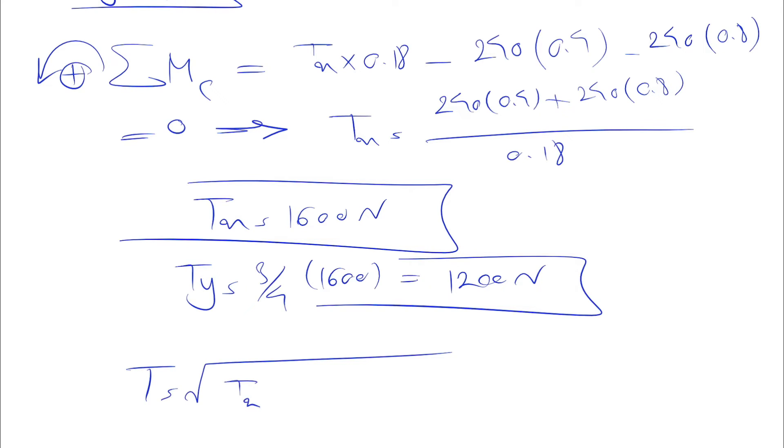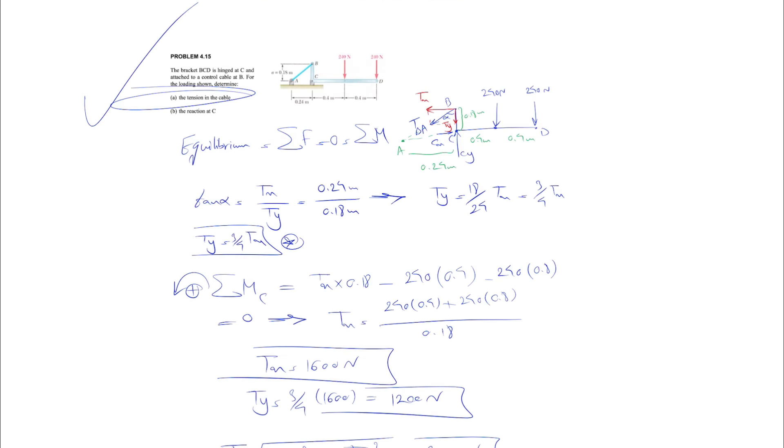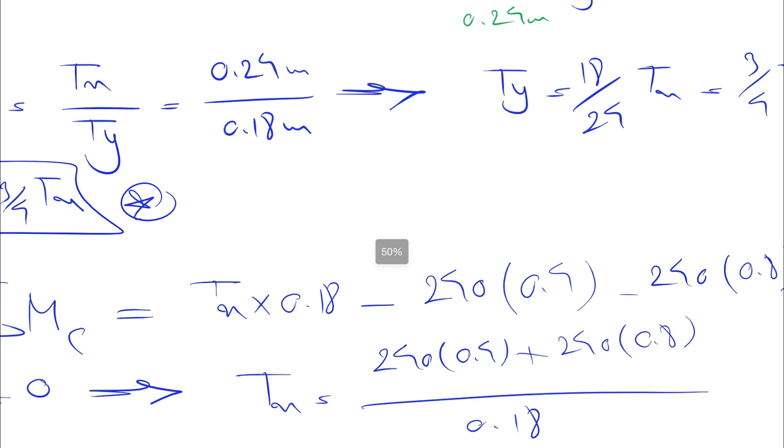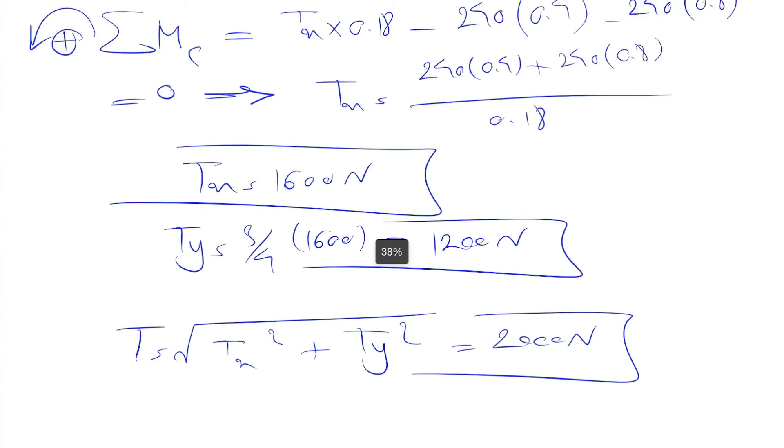Now that we have the Tx and Ty components for T, we can find the magnitude which is Tx squared plus Ty squared. If we calculate this we'll get 2000 newton for the magnitude of T. So we found the first unknown in this question, which was the tension in the cable, so part A is done.